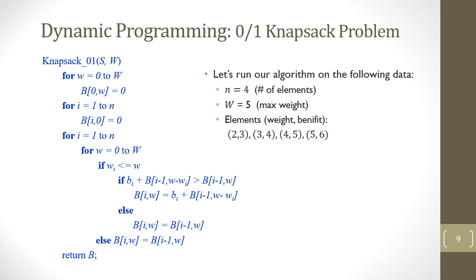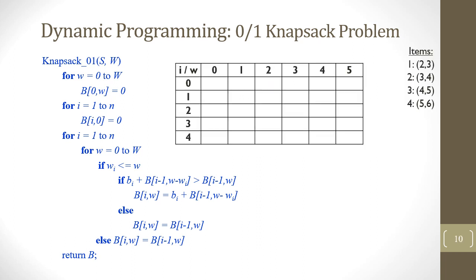Let's run our algorithm on the following example. We have four items with a sack capacity of five; the item weights and benefits are given. To solve this problem we will fill out a two-dimensional table. We will have an extra column and an extra row for the zero item and zero weight, since we assume sub-problems of zero weight and zero items as well. We initialize the first row and first column with zeros, as we receive no benefit from zero items or zero weight.